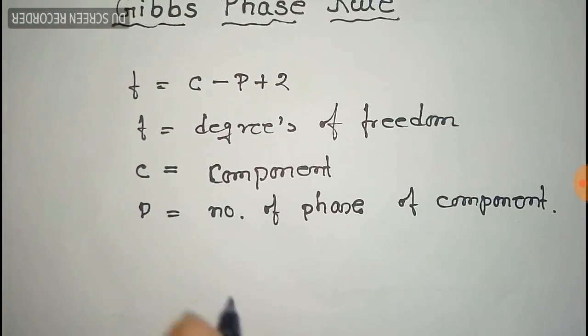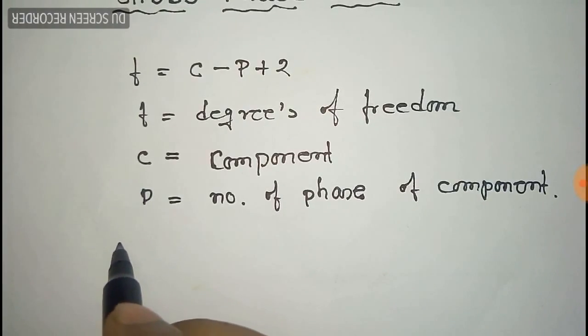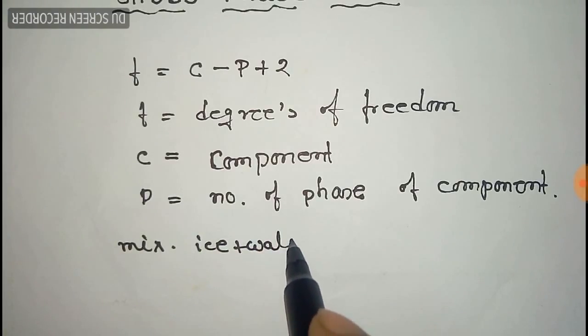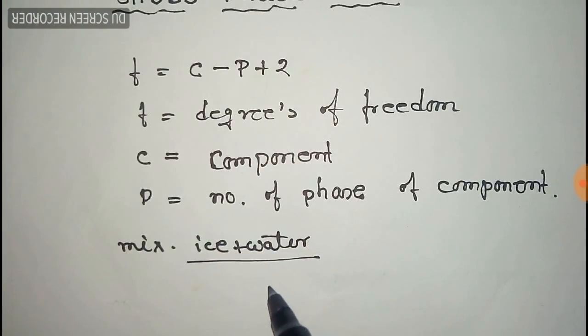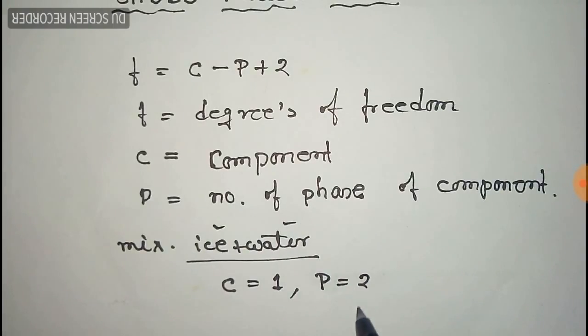For this, first of all we take an example of the mixture of ice and water. This is a one component system. So there c is equal to 1, and there are two phases, that is ice and water, so p equals 2. So the degrees of freedom is 1.